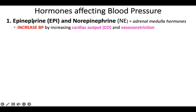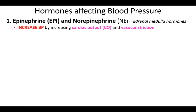The first hormones are epinephrine and norepinephrine, hormones from the adrenal medulla. These do essentially the same thing as sympathetic activity — they help raise blood pressure by increasing cardiac output, so by increasing heart rate and stroke volume, and also by causing vasoconstriction.